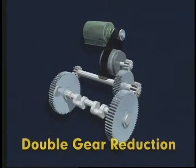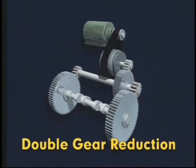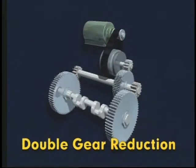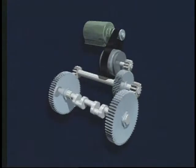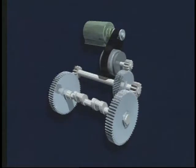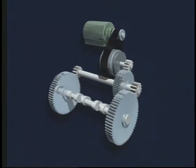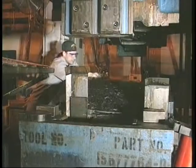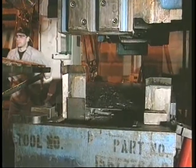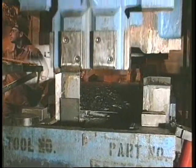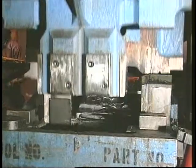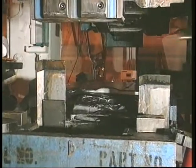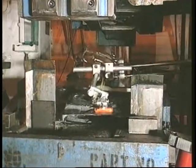Double gear reduction presses have two gear reductions from the flywheel to the crankshaft. These machines normally achieve a speed range from 8 to 20 strokes per minute and are used for difficult applications such as heavy deep drawing, cold forging, and flanging of large parts.